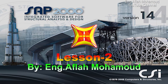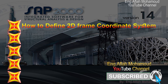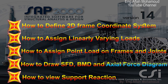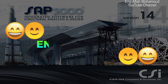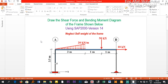Hello everybody, this is our second tutorial on SAP 2000 version 14. Today we are going to see how to draw shear force and bending moment diagram for a frame. In the last video we saw how to do this for a simple beam, and now we have a frame that consists of a beam and columns — it has a fixed support here and a pin support here.